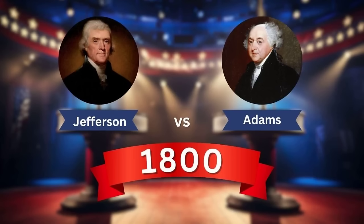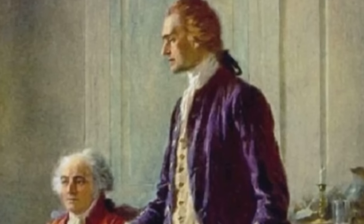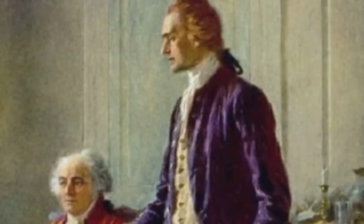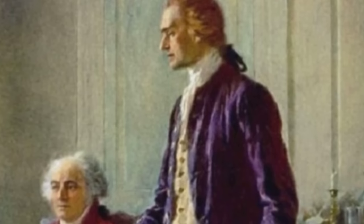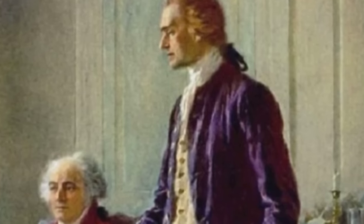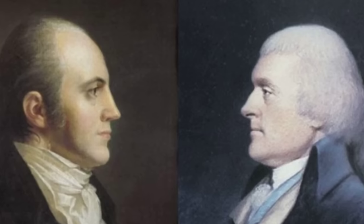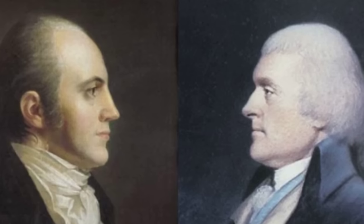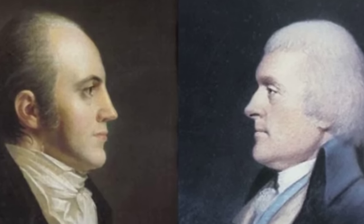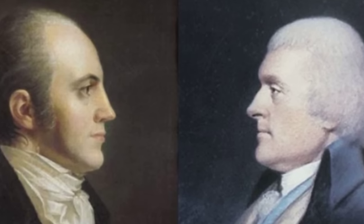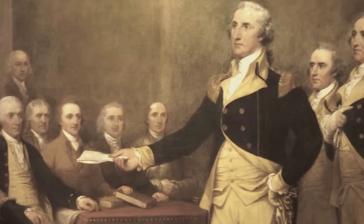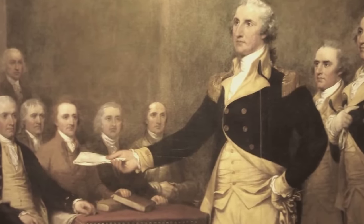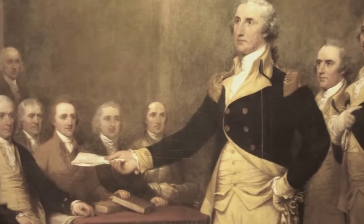1800: Thomas Jefferson vs. John Adams. The election of 1800 was a rematch between Thomas Jefferson and John Adams, filled with intense rivalry and political intrigue. It ended in a tie between Jefferson and his running mate Aaron Burr, leading to a decision in the House of Representatives. This election resulted in the Twelfth Amendment, changing how presidents and vice presidents are elected.